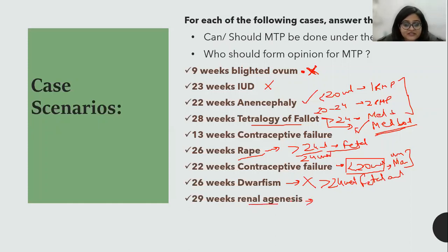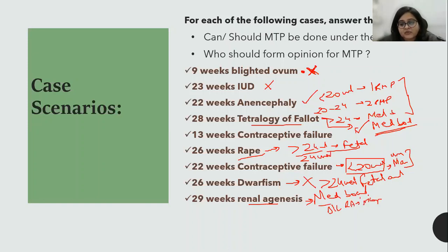Last scenario: 29 weeks fetal renal agenesis — yes or no? This will go to the Medical Board. We cannot decide ourselves. Although bilateral renal agenesis is incompatible with life, the Medical Board must decide. Remember: after 24 weeks, for any fetal anomaly, refer to the Medical Board. There is no upper limit for termination beyond 24 weeks, but it always goes to the Medical Board.